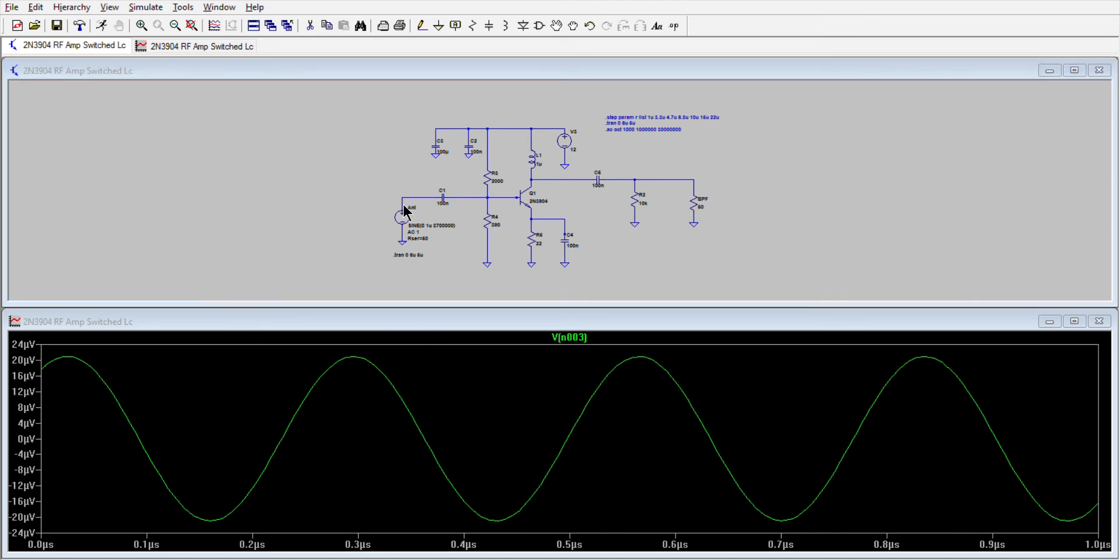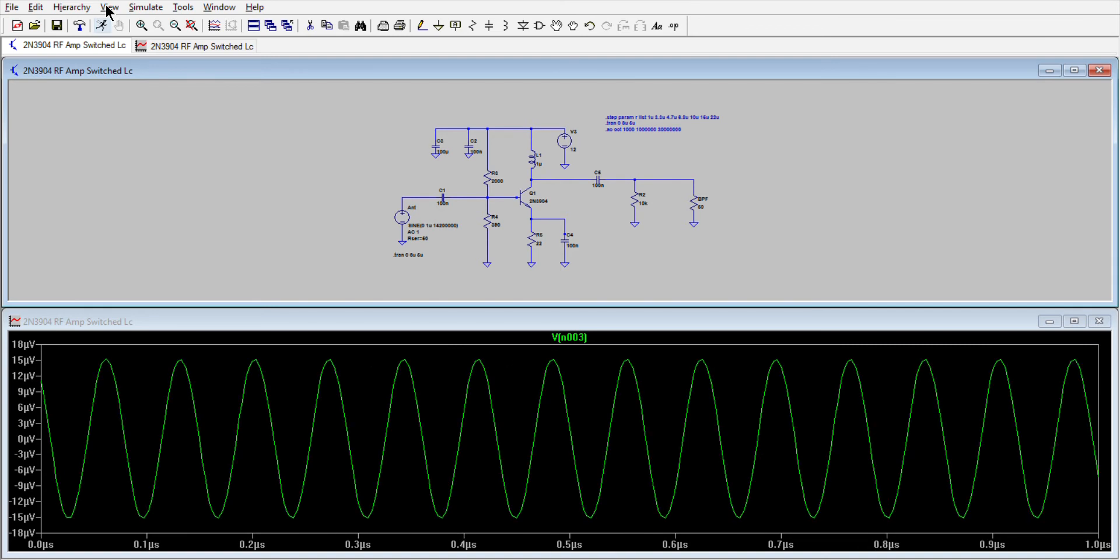So this is from our sig gen. That's at 3.7 megs. And then we can increase it up to, say, 14,200, enter. Simulate it again. And there we are at the much higher frequency, 14.2 megs.